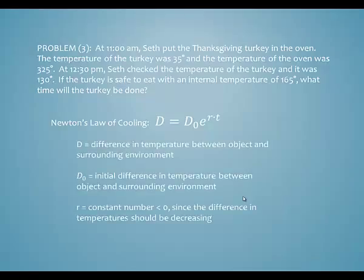In Newton's law of cooling, D is the difference in temperature between the object and the environment. D sub zero is the initial difference in temperature. R is a constant depending on the oven temperature and the type of meat being cooked, and R is always negative — because as the object heats up or cools down in its environment, the difference between temperatures is always shrinking.